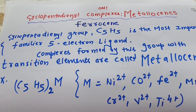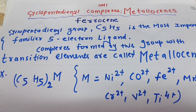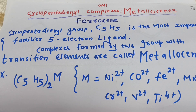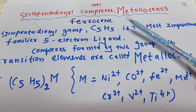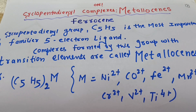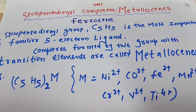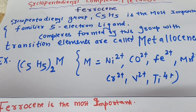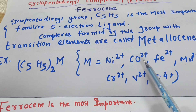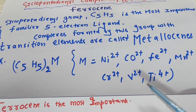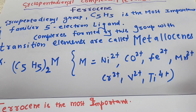Hello students, welcome to Pacific Chemistry Classes. Today's topic is ferrocene, which comes under the category of metallocenes. We are talking about cyclopentadienyl complexes. The cyclopentadienyl group, C5H5, is the most important 5-electron ligand. It donates 5 electrons, and as C5H5 minus it donates 6 electrons. The complexes formed by this group with transition metals are called metallocenes, represented as (C5H5)M, where metals can be Ni2+, Co2+, Fe2+, Mn2+, Cr2+, V2+, or Ti4+.